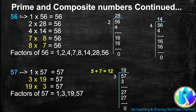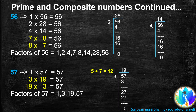56 is not a multiple of 3. Using the divisibility rule, 5 plus 6 equals 11, and 11 is not a multiple of 3. But 56 is a multiple of 4. When we divide 56 by 4, we get quotient 14, so 14 is another factor of 56, and 4 times 14 equals 56.